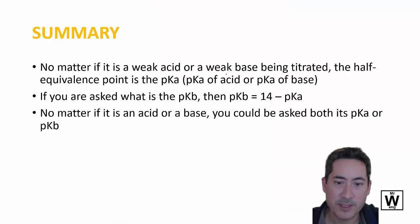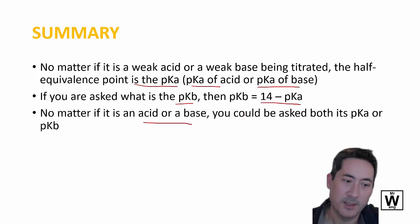So just a summary then. No matter if it's weak acid or weak base being titrated, the half equivalence point is the pKa. So you could be finding the pKa of the acid or the pKa of the base. If you want to find the pKb, you have to minus 14 from the pKa. So it doesn't matter if it's an acid or a base. You could be asked the pKa of the acid or the pKb of the acid or the pKa of the base or the pKb of the base.